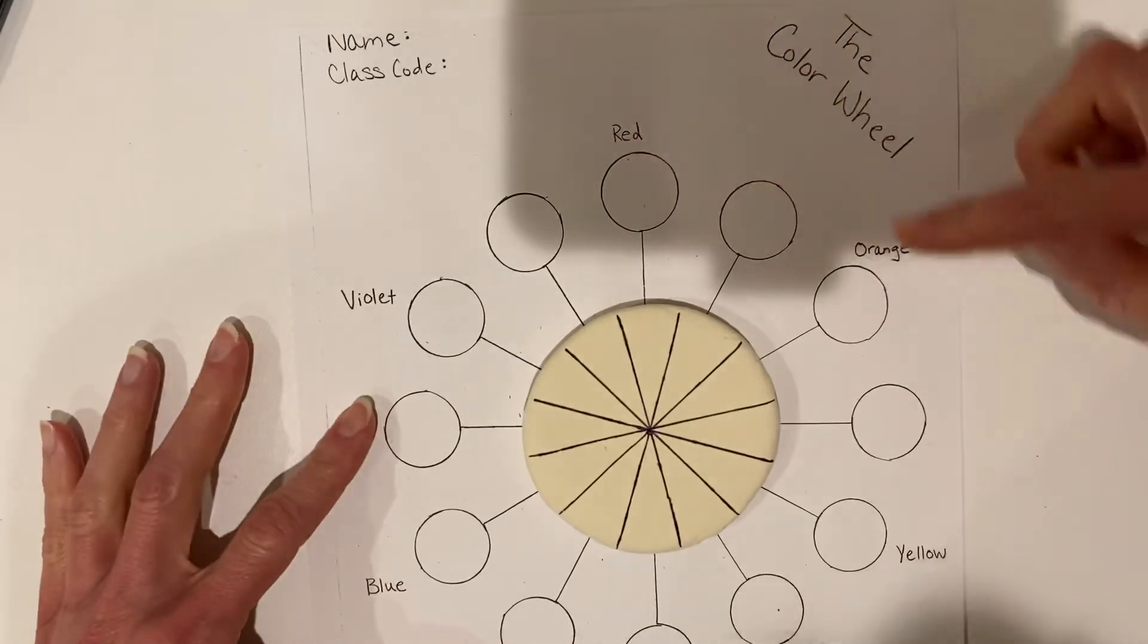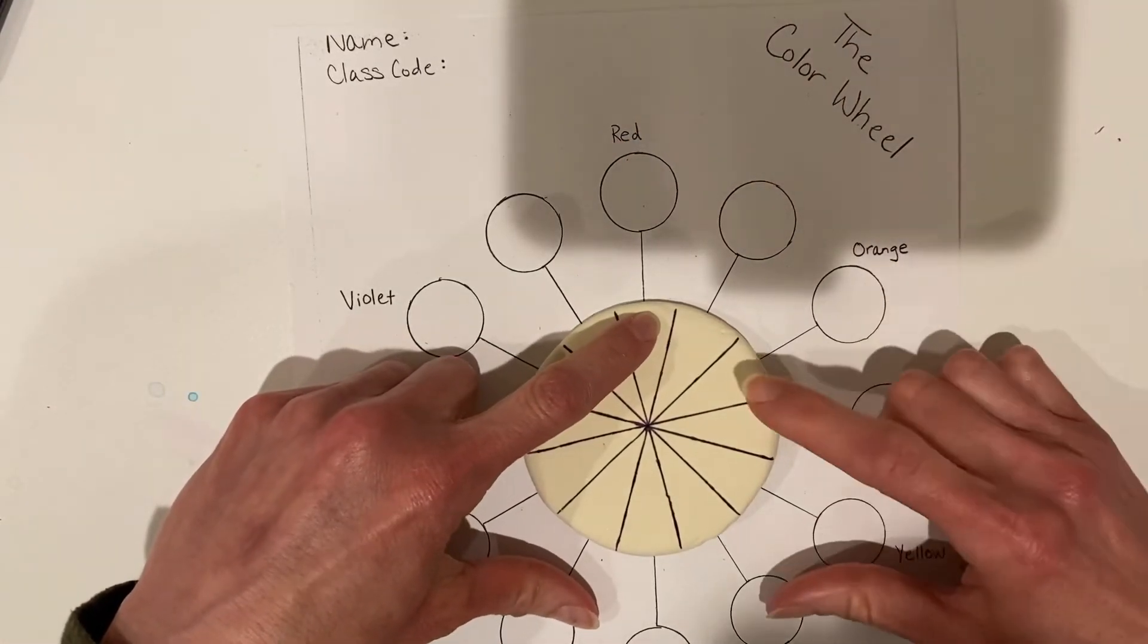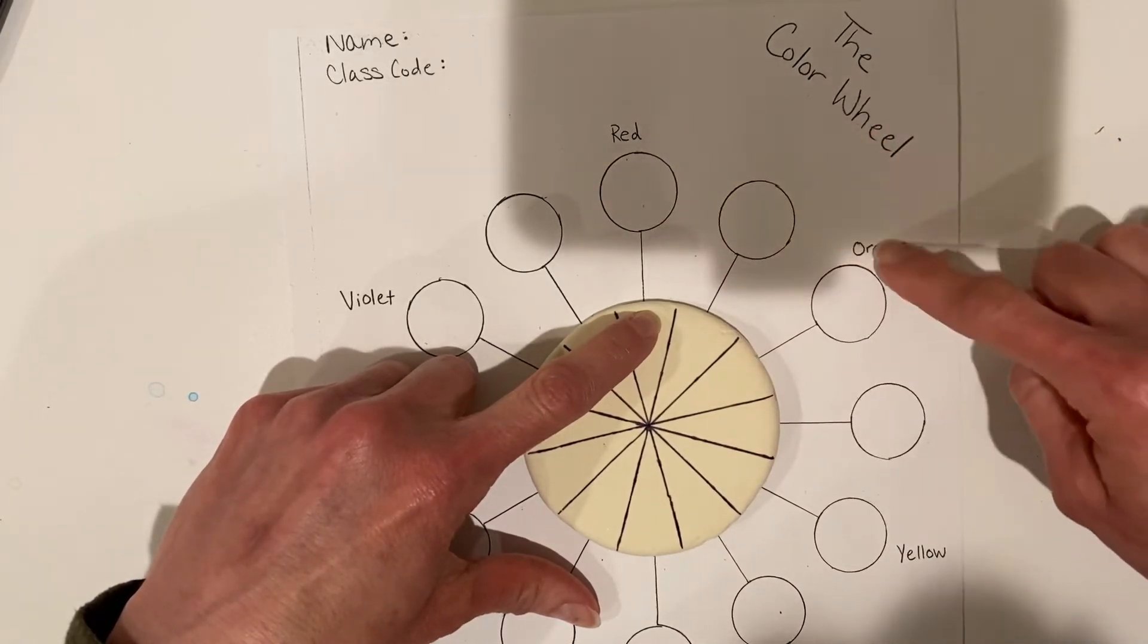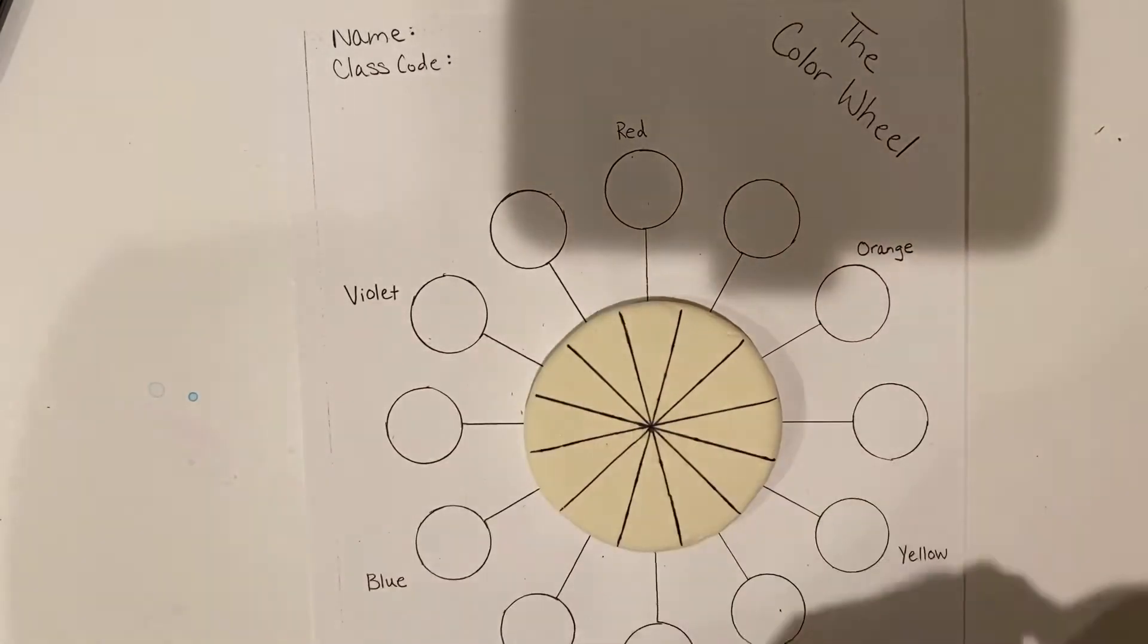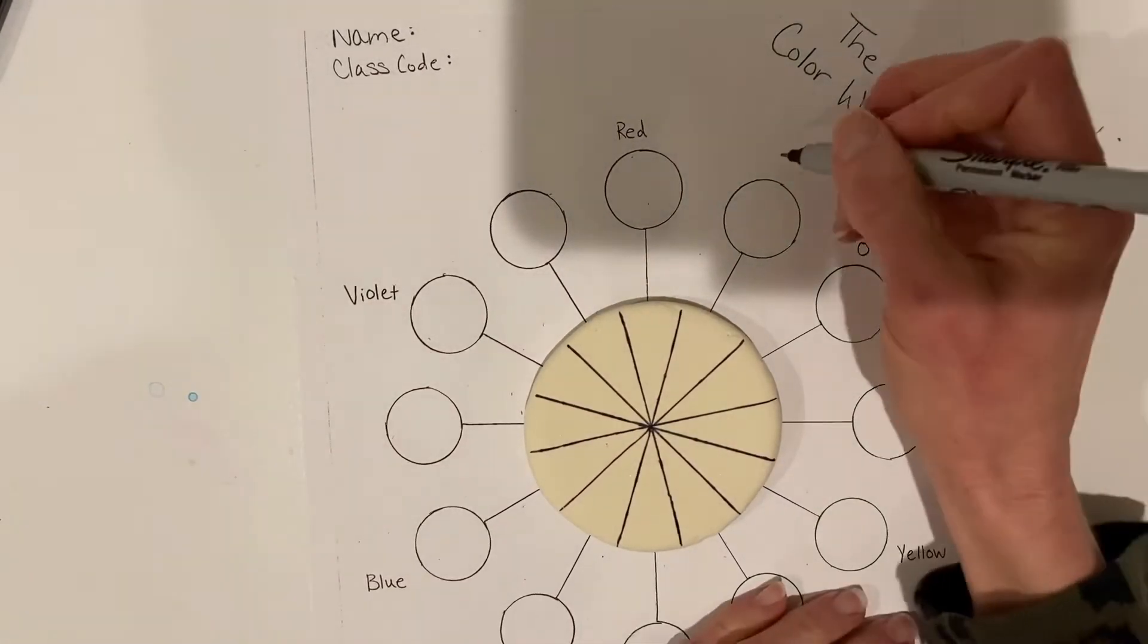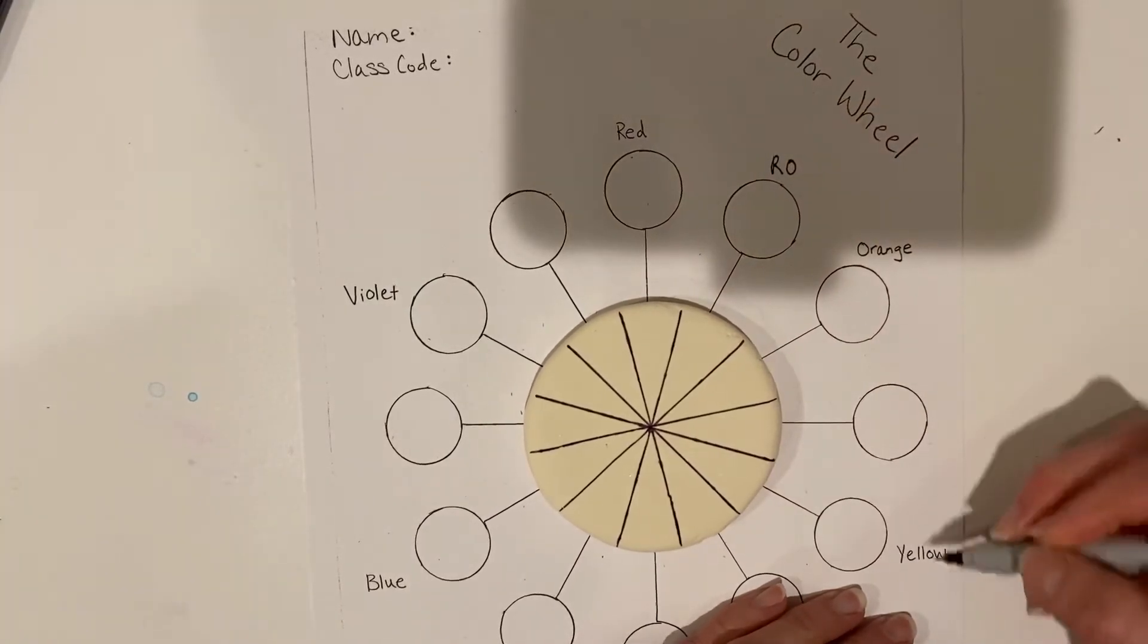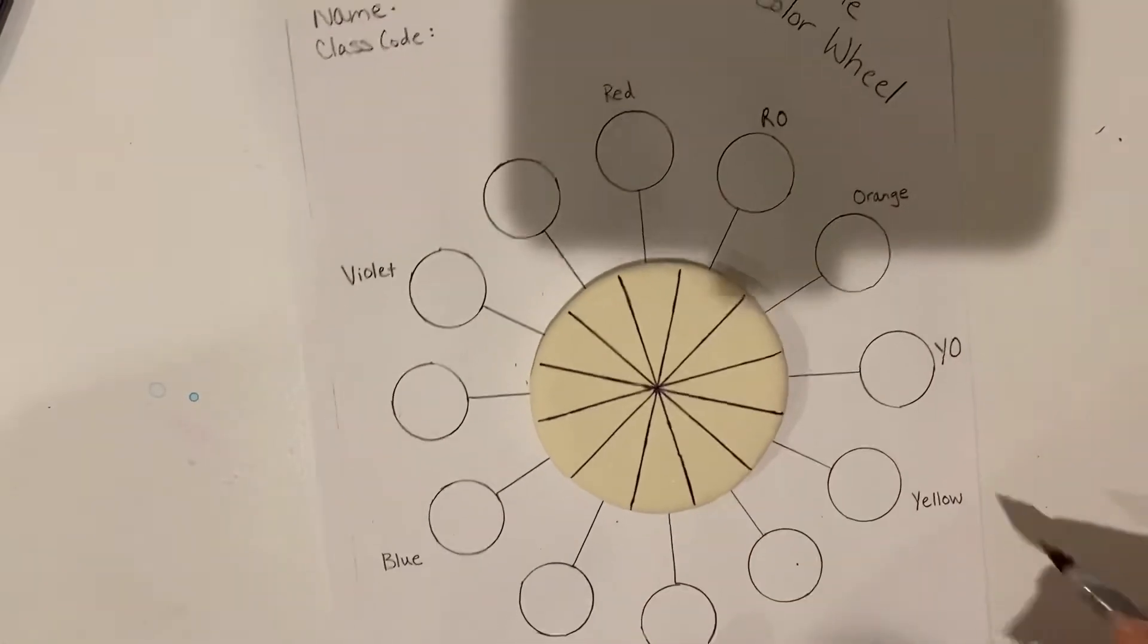The intermediate colors are in between. So like here we have red and orange. If you color this one red and this one orange, then you know this one is the intermediate color of these two colors, and it's red-orange. So what I think is helpful is if you go and write them all the way around—the intermediate colors. Yellow and orange, Y-O for yellow-orange, and so on.